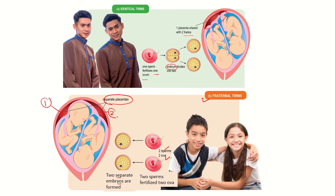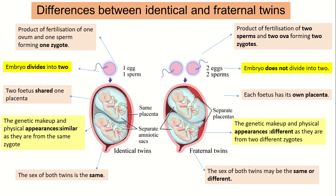Here are the differences between identical twins and fraternal twins. For identical twins, one zygote is formed when one ovum is fertilized by one sperm. The embryo then divides into two, and these two fetuses share one placenta.